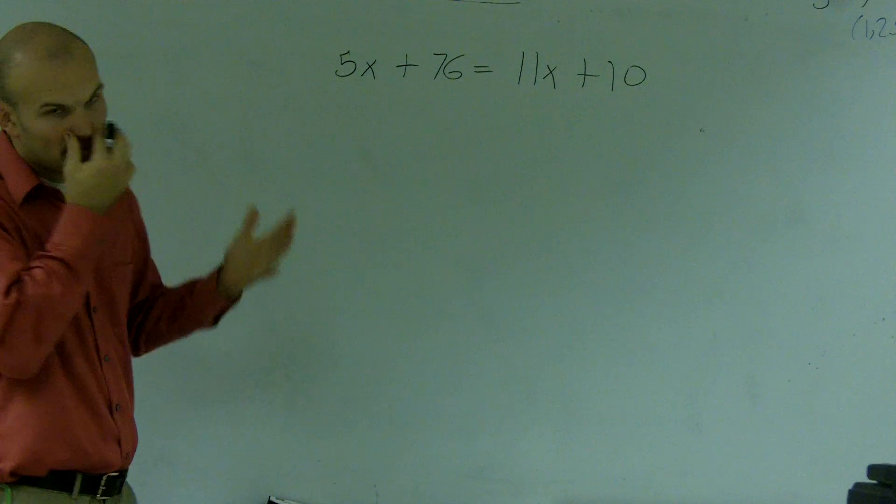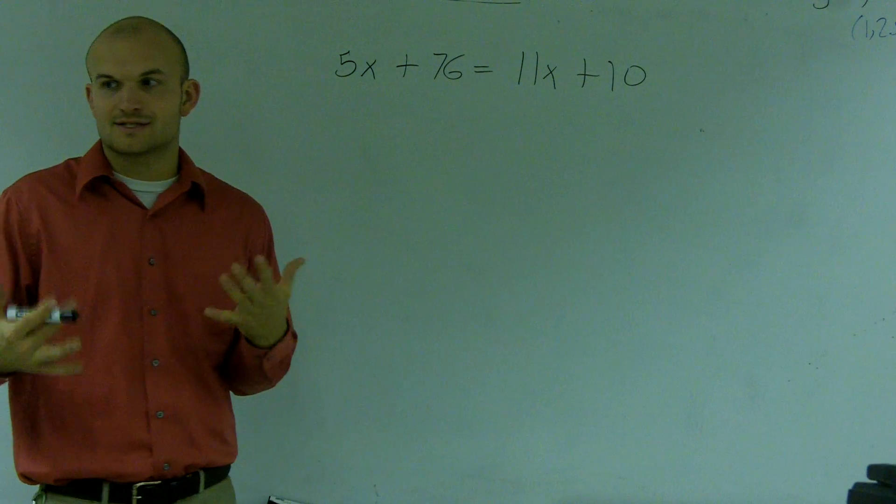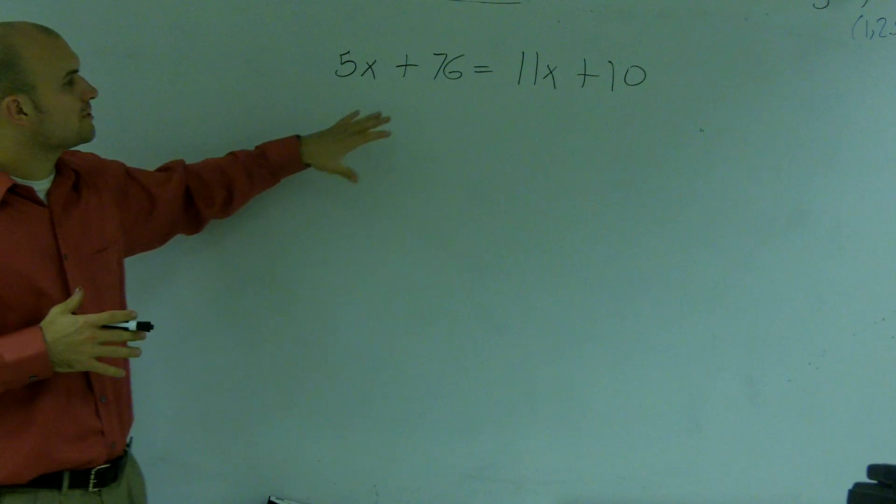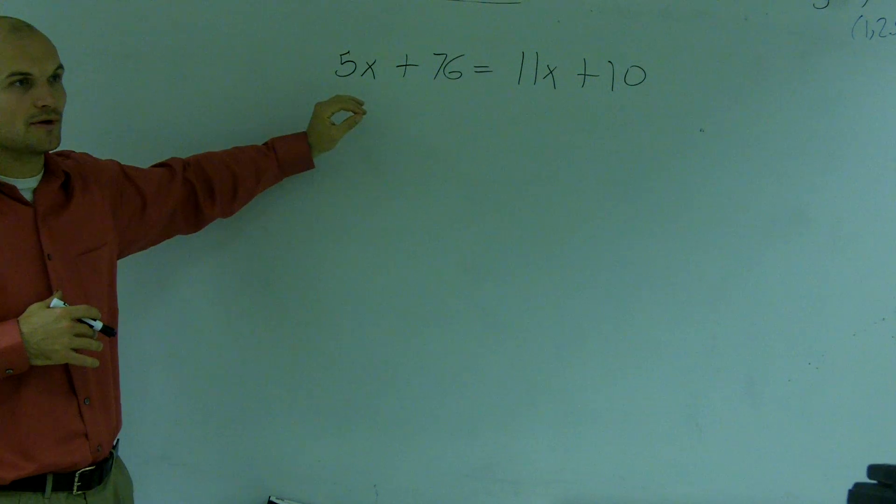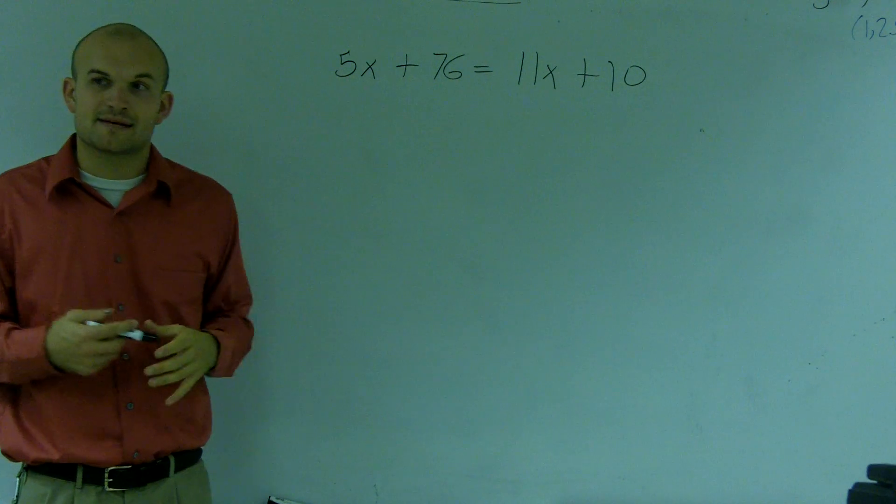Whenever we're solving an equation, we have a variable on both sides. The easiest thing that I like to do is kind of follow a certain type of algorithm. I like to get rid of my smallest variable first.